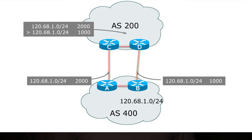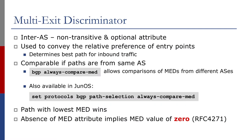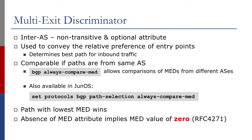Lowest MED wins, which means traffic from AS200 to AS400 will follow the D to B link. MED is inter-AS, so it's used between two autonomous systems. It's a non-transitive attribute because it's only used between the two ASs — an MED that you set and announce to your neighboring AS will not be propagated to any other autonomous system. It's an optional attribute as well; you don't have to set it. It's used to convey the relative preference of entry points, determining the best path for inbound traffic.